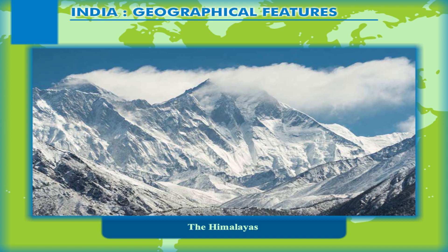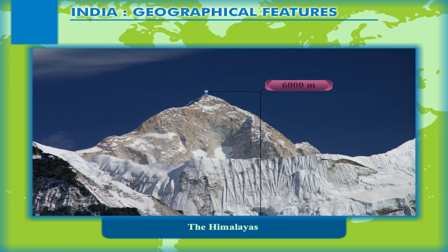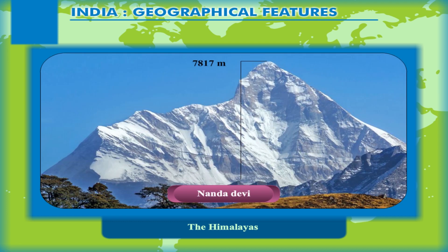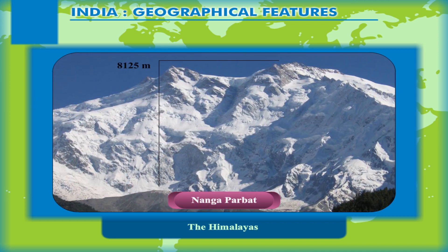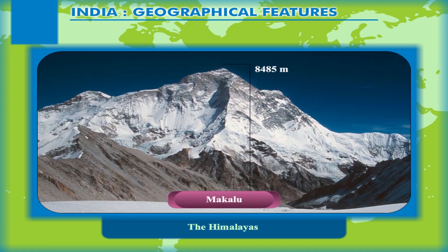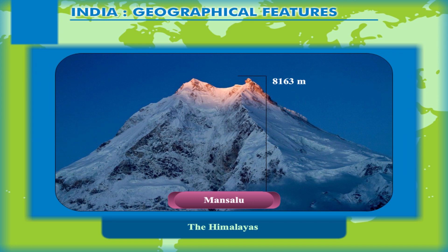The lofty peaks of the Greater Himalayas with an average height of about 6,000 m are almost always covered with snow. In India, the highest peak of the Himalayas is Kanchenjunga at 8,586 m, which lies in Sikkim. Some other high peaks of the Greater Himalayas are Nanda Devi (7,817 m), Nanga Parbat (8,125 m), Makalu (8,485 m), and Mansalu (8,163 m).